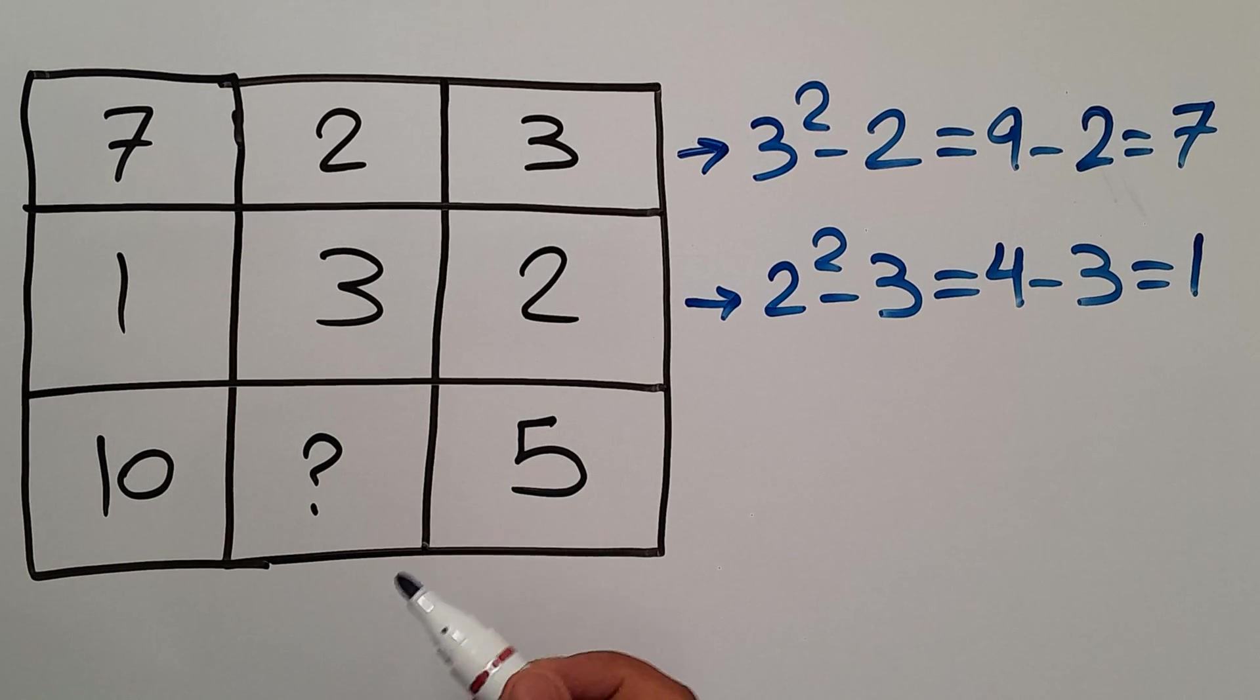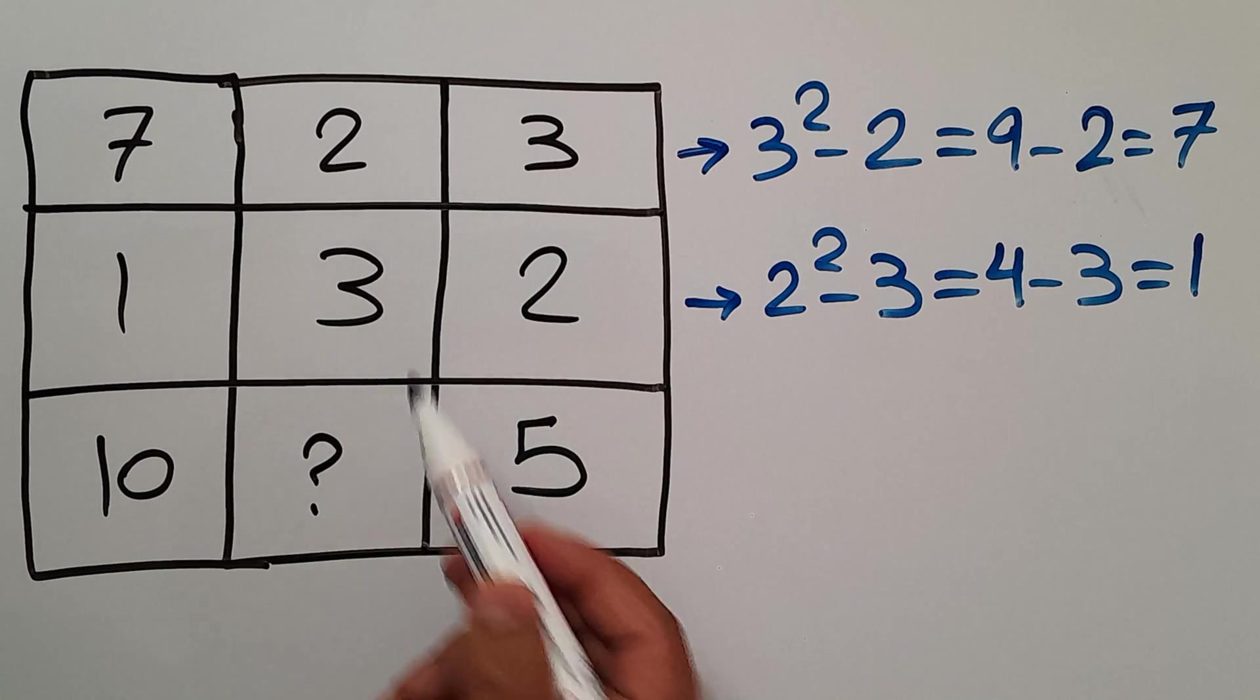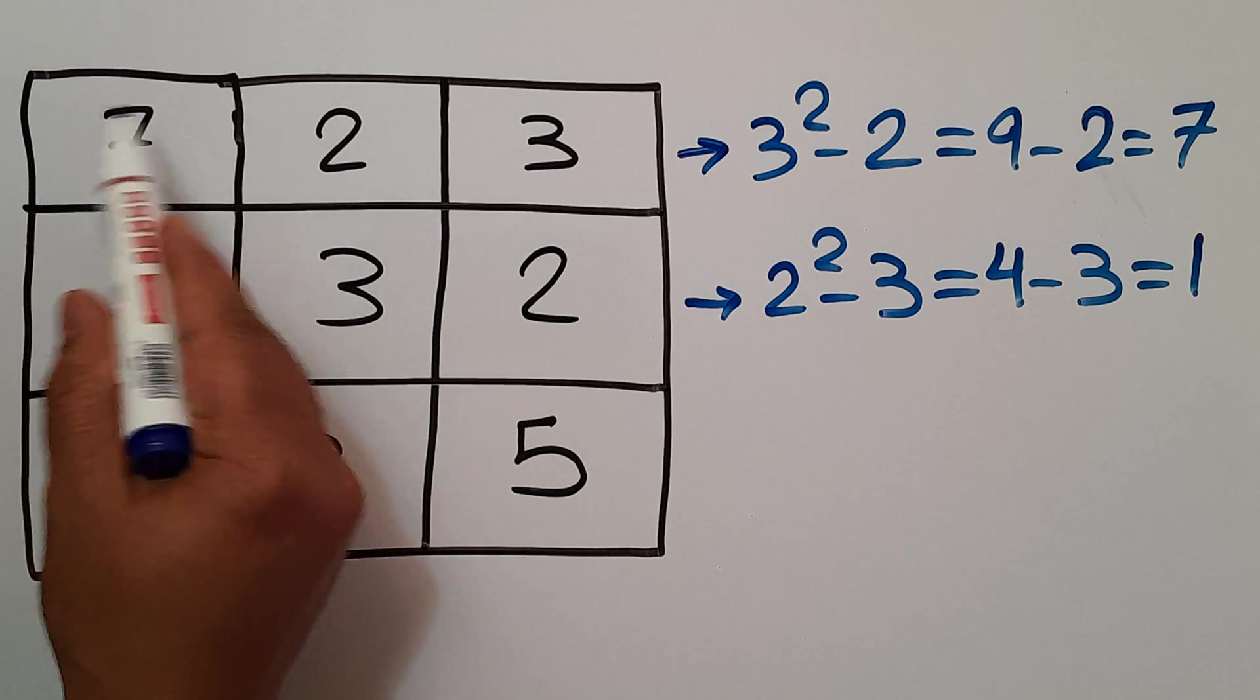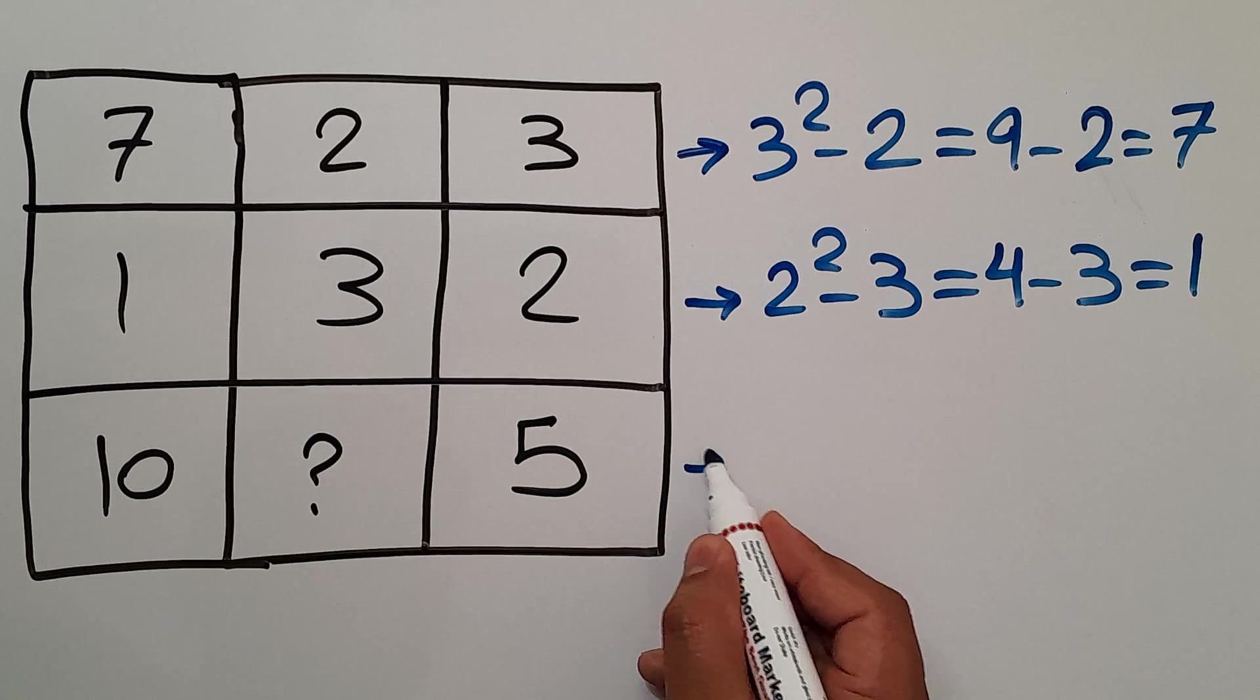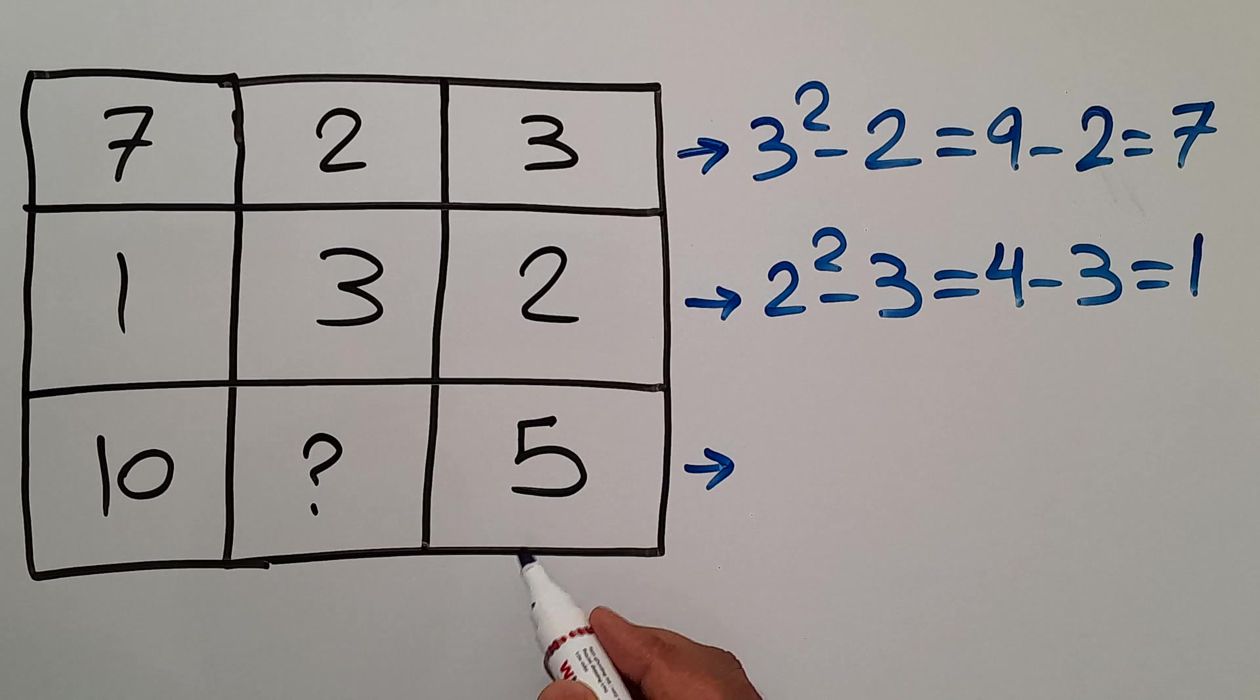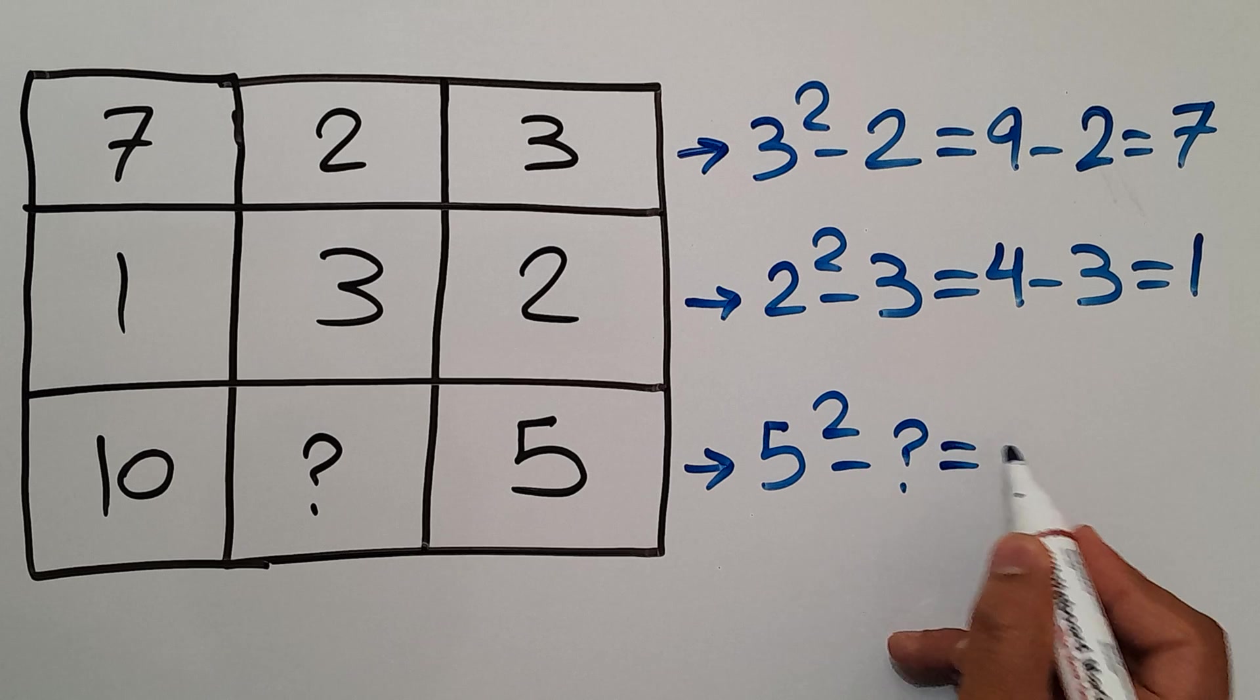Now let's use this pattern to find the missing number in the third row. We have 10, question mark, and 5. So 5 squared minus question mark gives us 10.